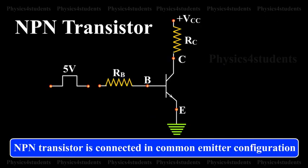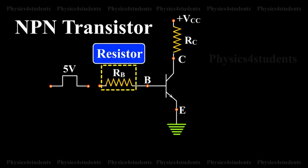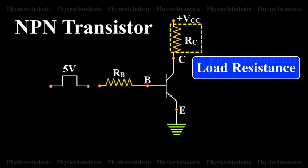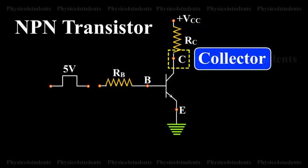In the visual, an NPN transistor is connected in common emitter configuration, and a resistor RB is connected in series with the base. The load resistance RC is connected in series with the collector.